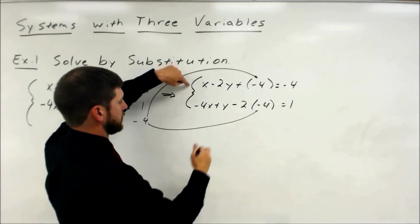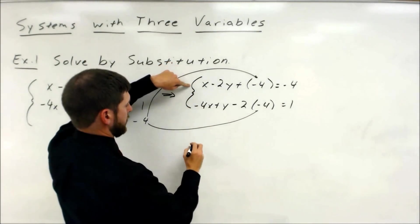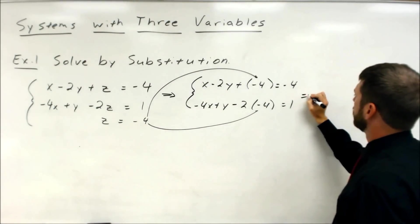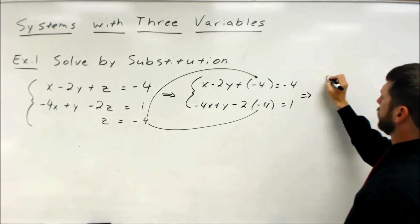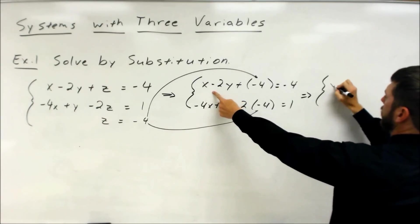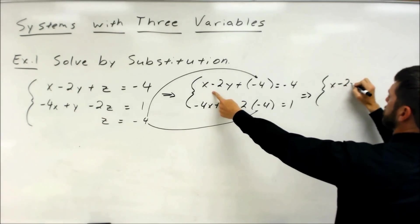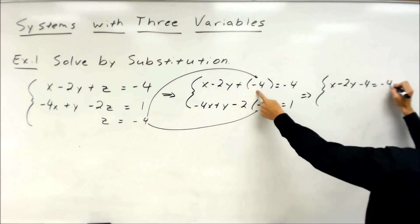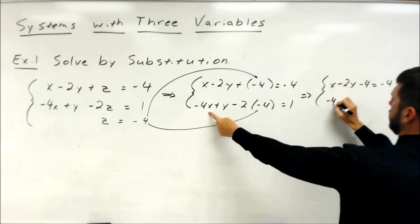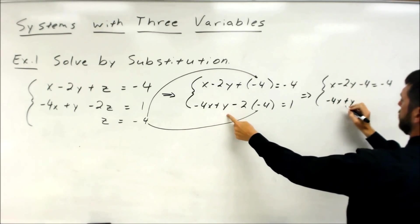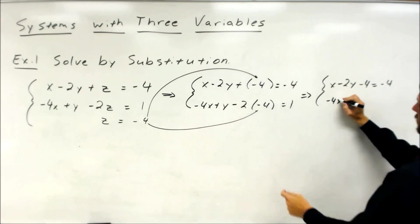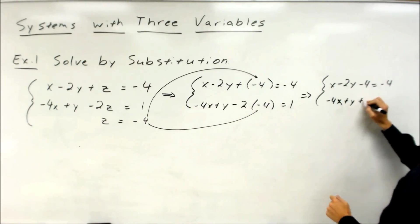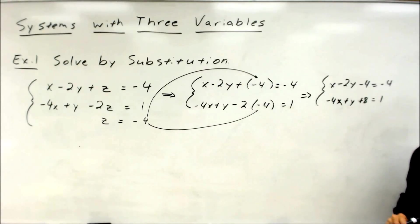Clean it up. So we now have — let's move it over here, we've got room. x minus 2y minus 4 equals negative four. Negative 4x plus y plus 8 equals one.